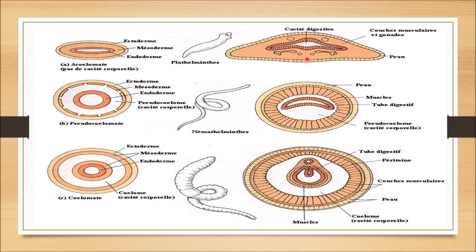This is the actual structure. In a pseudocoelomate: ectoderm is present, mesoderm is present but only as a patch, and the cavity between the mesoderm and endoderm looks like a coelom but is not a true coelom — it is called a pseudocoelom.